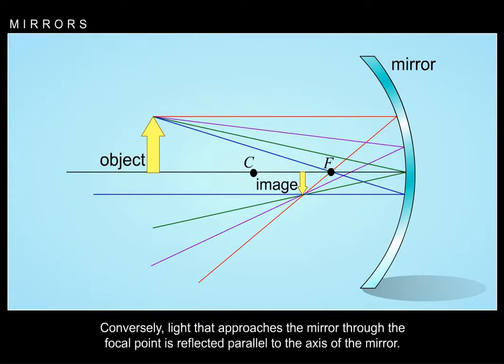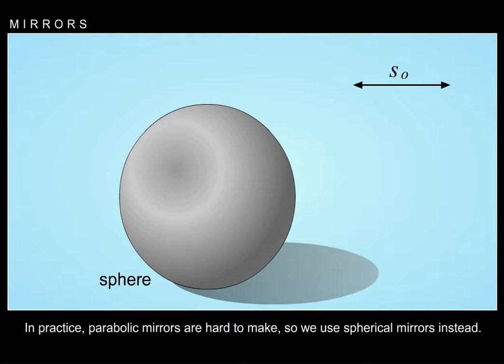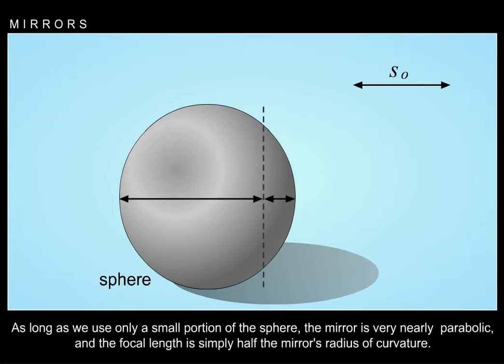Conversely, light that approaches the mirror through the focal point is reflected parallel to the axis of the mirror. In practice, parabolic mirrors are hard to make, so we use spherical mirrors instead. As long as we use only a small portion of the sphere, the mirror is very nearly parabolic, and the focal length is simply half the mirror's radius of curvature.